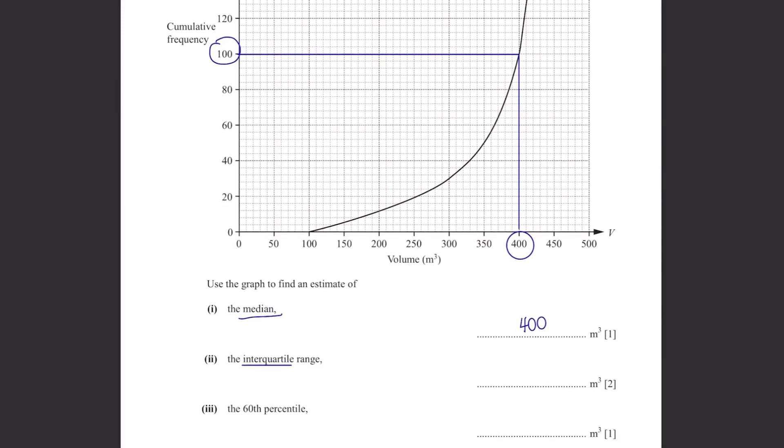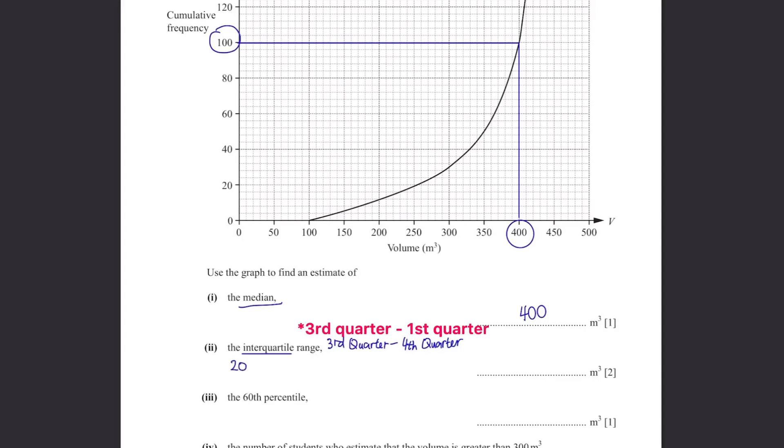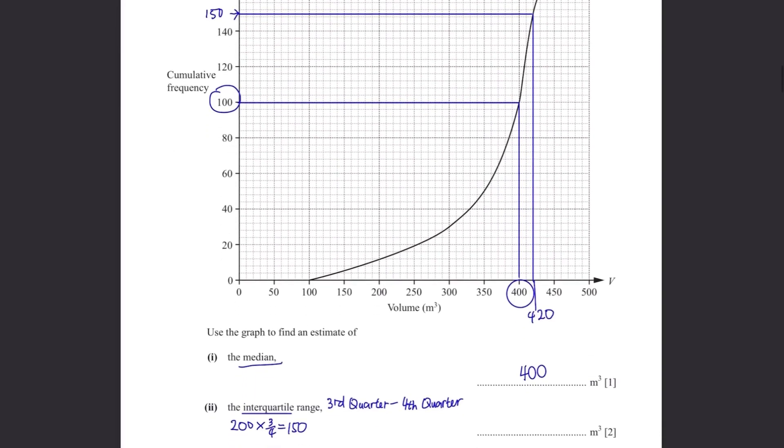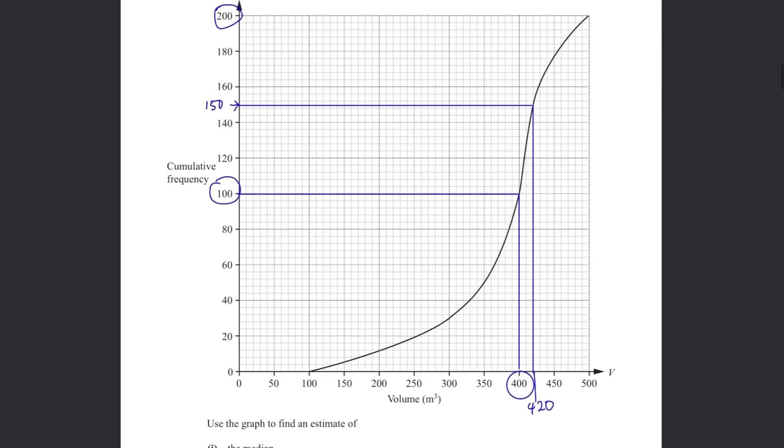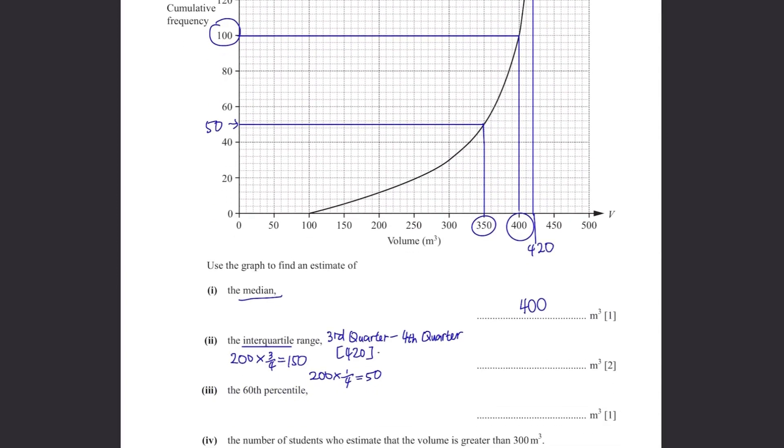For the interquartile range, you need to find the difference between the third quarter and the first quarter of the volume. To find the third quarter, find the third quarter of the cumulative frequency. 200 times 3 over 4 so it's 150 and 150 is at 420 in terms of volume. Then find the first quarter by doing 200 times 1 over 4 so it's 50 and 50 is at 350 in volume. So 420 minus 350 and the answer is 70.